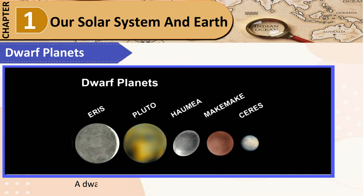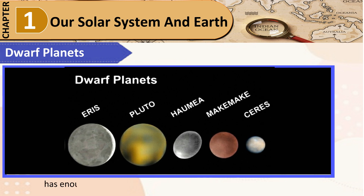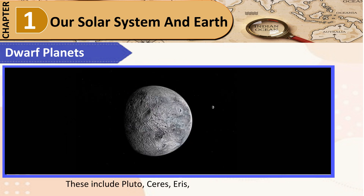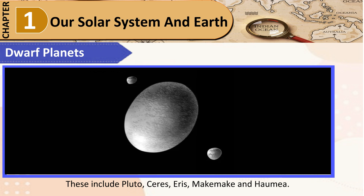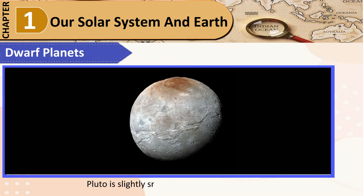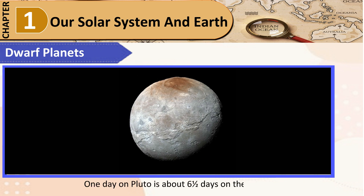Dwarf Planet: A dwarf planet is a celestial body that orbits the Sun, has enough mass to assume a nearly round shape, and is not a moon. These include Pluto, Ceres, Eris, Makemake, and Haumea. Pluto, earlier considered to be the smallest planet, was classified as a dwarf planet in 2006. Pluto is slightly smaller than the Earth's moon. It takes Pluto 248 years to go around the Sun. One day on Pluto is about 6 and a half Earth days.